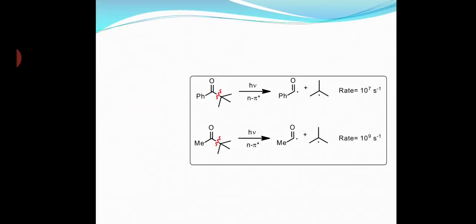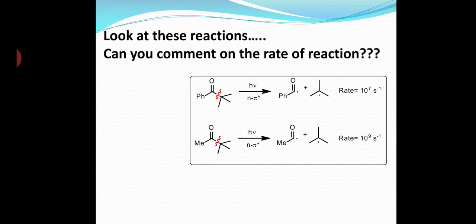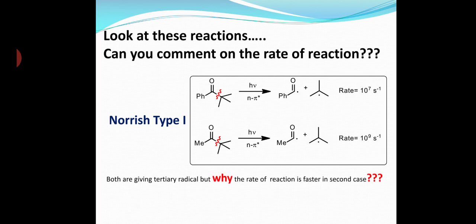Look at these reactions. Can you comment on the rate of the Norrish Type 1 reaction? Both of these reactions give a tertiary radical — so why is the rate of the reaction faster in the second case?